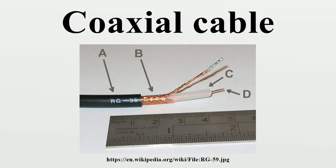Coaxial cable differs from other shielded cable used for carrying lower frequency signals in that the dimensions of the cable are controlled to give a precise, constant conductor spacing, which is needed for it to function efficiently as a transmission line.